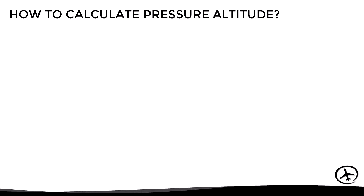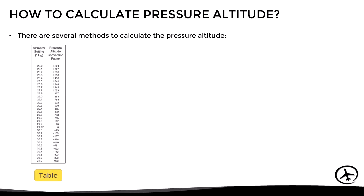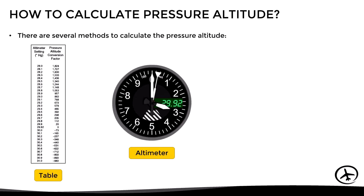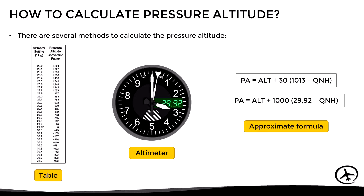Having understood the concept of pressure altitude, let's see how it is calculated. There are several methods: we can use either a table with correction values depending on the QNH, or directly use the altimeter of the aircraft, or use an approximate formula to determine the pressure altitude.